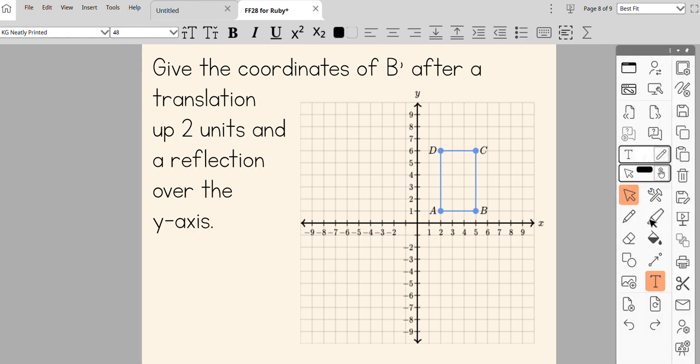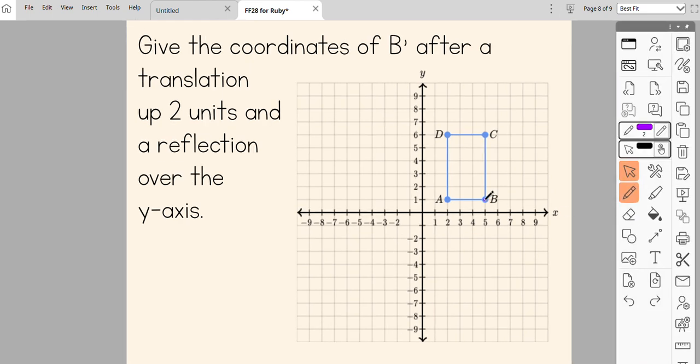So let me get back over here, make sure I have a pen. That's all we're worried about is where B prime is going to be. So the first thing we're going to do is translation up two and then a reflection across the y-axis.